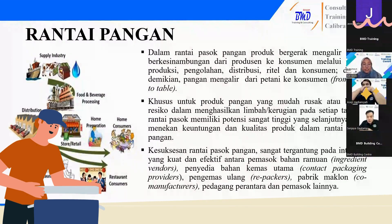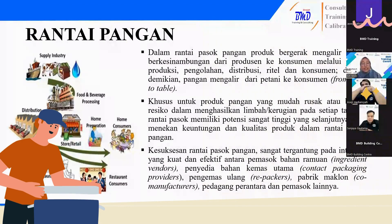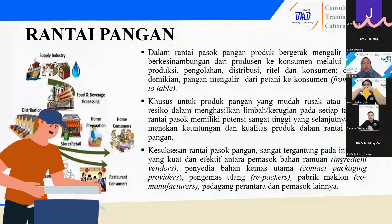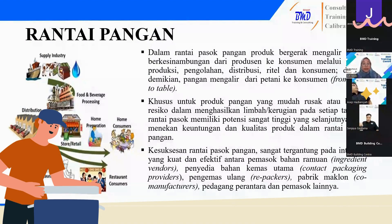Kemudian dari suplai industri masuk ke food beverage atau processing. Processing ini, kalau misalkan tadi di industri catering, dari bahan baku sampai dengan proses pemasakan. Kalau misalkan industri makanan, pengolahan di pabrik mungkin dari susu, telur, sayuran yang diproses di pabrik. Untuk di catering, biasanya suplainya belanja langsung ke supplier utama. Langsung suplai utama ya Pak? Betul.